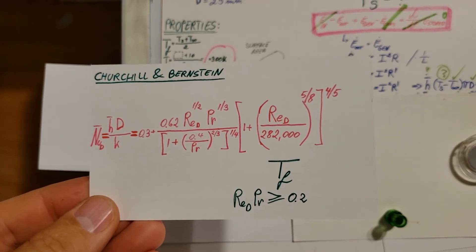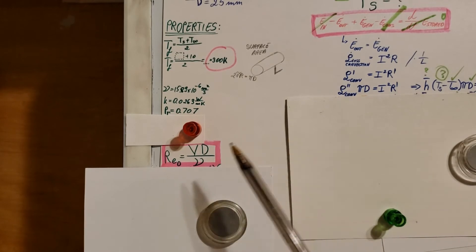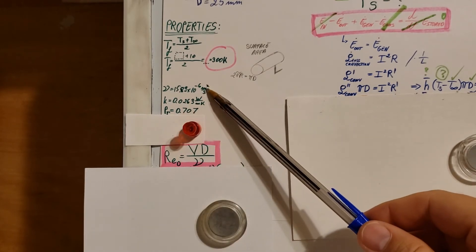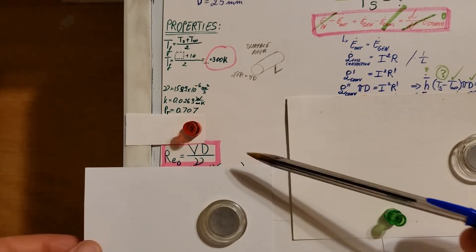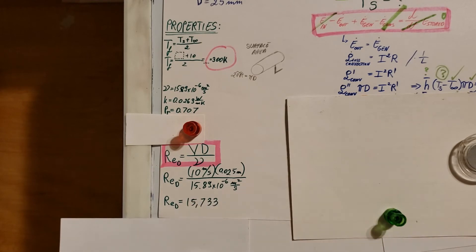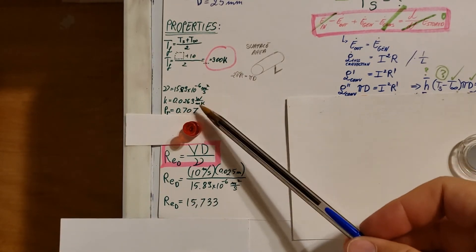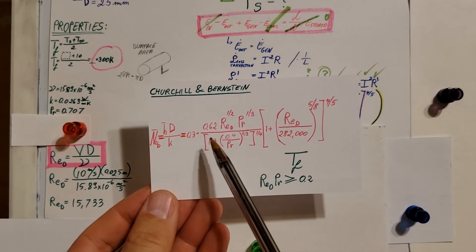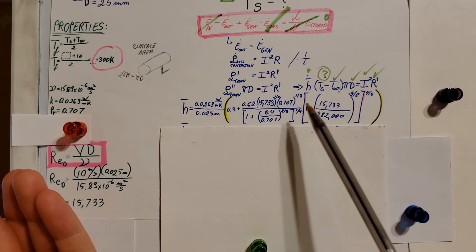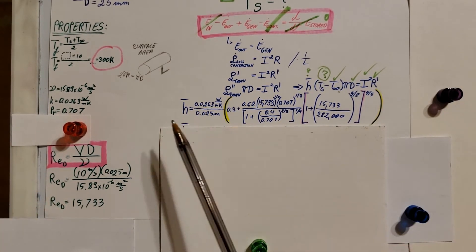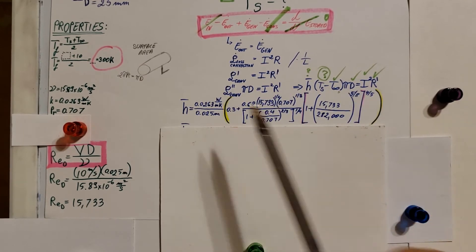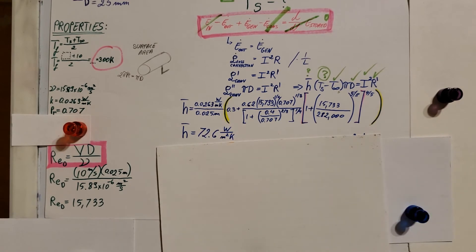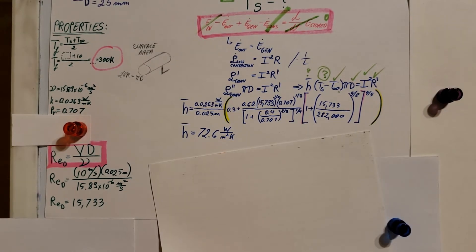Using Churchill & Bernstein, I need the Reynolds number, thermal conductivity k, and Prandtl number. I found all properties at 300 kelvin, including kinematic viscosity. Plugging everything into the Reynolds number formula gives the Reynolds number. Then plugging the diameter, k, and Reynolds number into the Churchill & Bernstein formula and calculating through, we find that h equals 72.6 watts per meter squared kelvin.